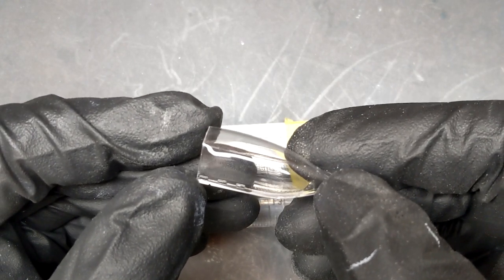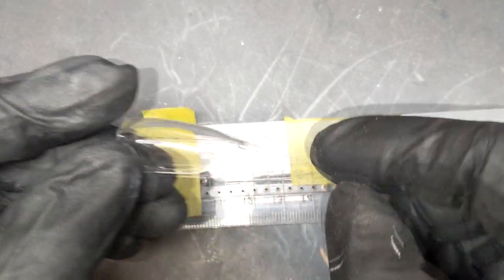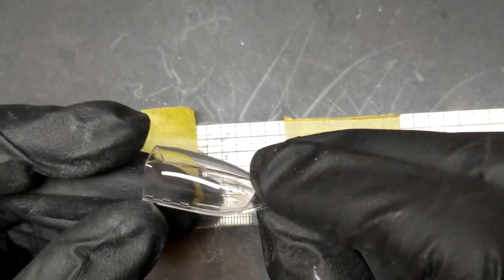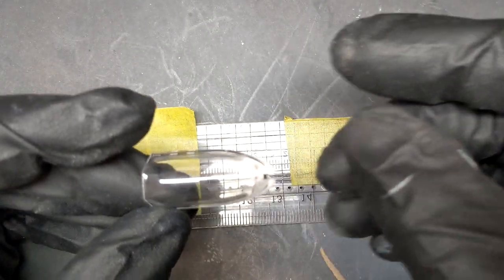So to mask this, I'm going to have to cut some thin strips of tape and follow that curve. Because I'm not going to be able to use that same flashlight technique to make this work.